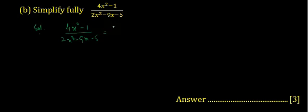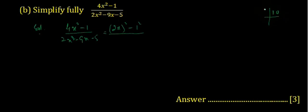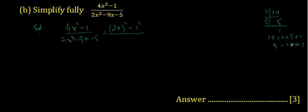4x squared minus 1 can be written as 2x squared minus 1 squared, so we apply the formula a squared minus b squared for factorization. For the denominator, it is a quadratic expression so we apply the middle-term break. The coefficient product is 10, and 10 plus 1 minus 1 gives 9, so minus 9x can be split as minus 10x plus x.